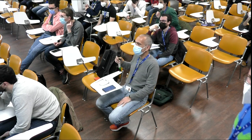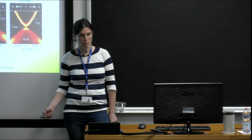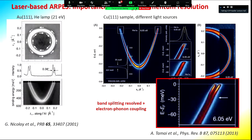Electron-phonon coupling can be nicely seen, for example, in the copper (111) surface state using a laser beamline with very good beam stability and energy resolution. You can see a kink — the band does not go straight to the Fermi surface but shows a change in band slope. From there, one can estimate parameters related to the electron-phonon coupling.